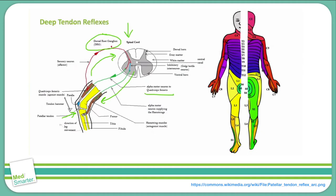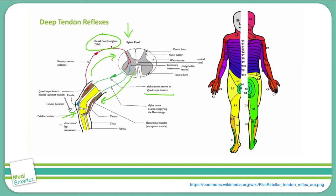This entire circuit is contained within the afferent nerve, the spinal cord, and the efferent nerve. Damage to the spinal cord above or below the spinal nerve responsible for the reflex should not affect that reflex, as long as the afferent nerve, posterior horn, anterior horn, and efferent nerve are all intact.